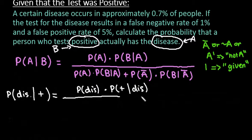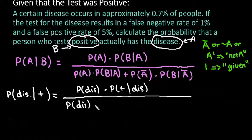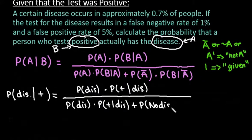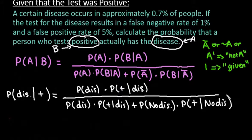We're going to use the information in the problem to fill in all of these values. Not A just means that you don't have the disease — 'no disease.' There is the probability of no disease times the probability that you tested positive given that you don't have the disease, because sometimes you'll have a false positive, which means the test showed that you have it when you really don't.